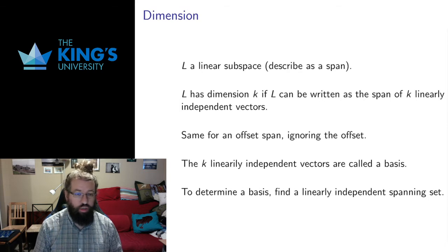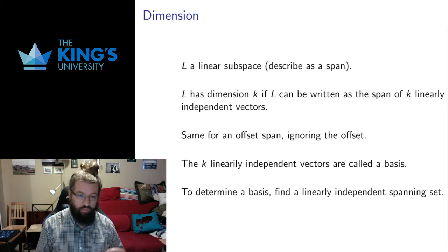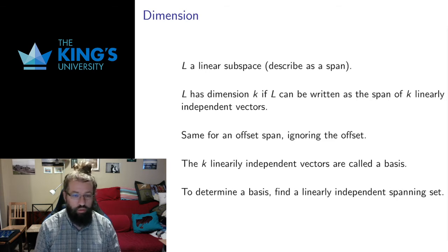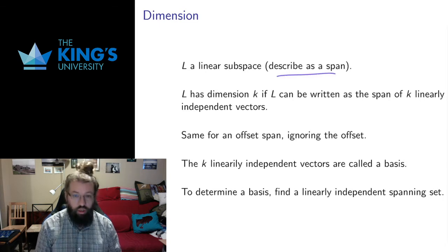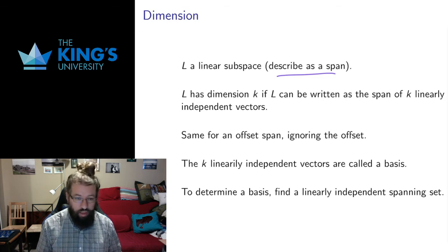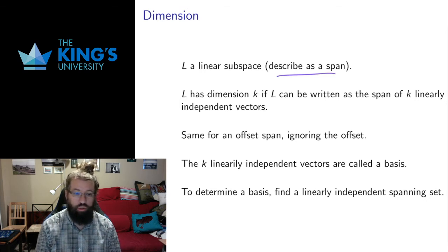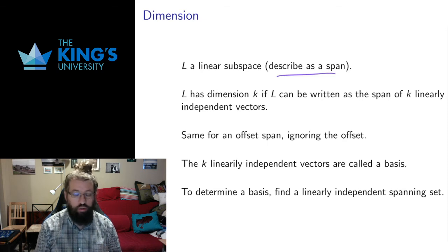One of the trickiest notions to define in geometric mathematics is the notion of dimension, but luckily for flat things it's a little more reasonable than some of the subtleties that show up in other settings. We want to talk about the dimension of a linear subspace. All linear subspaces can be described as a span — the set of all linear combinations of some number of vectors. The definitions of span, linear independence, and linear combination from the previous video are fundamental and used throughout the rest of the course.